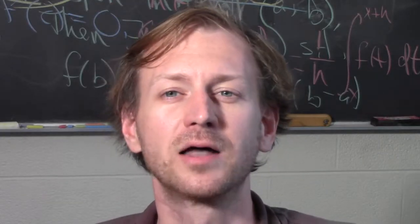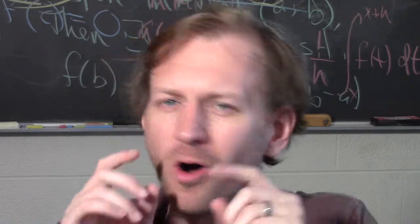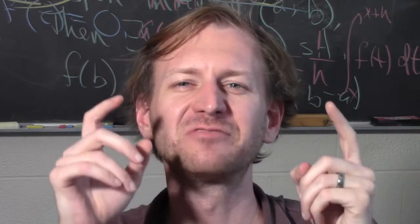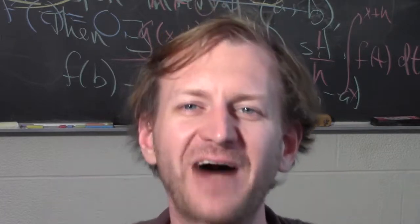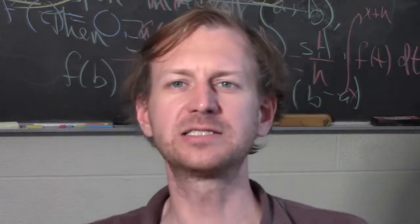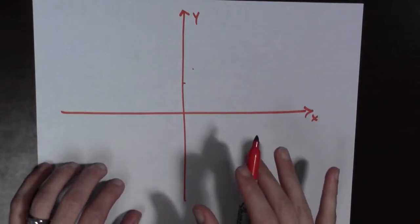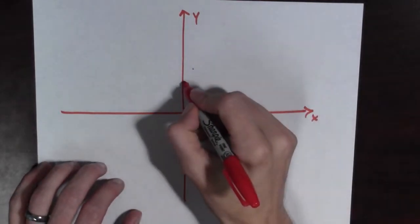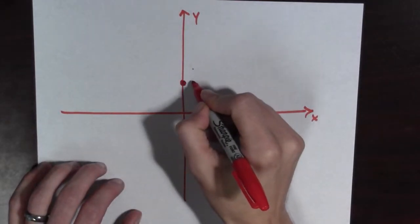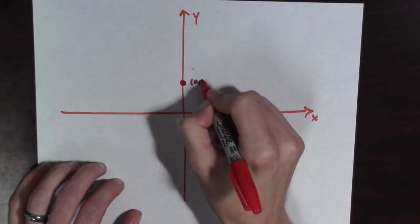Hello there. Now, suppose you have a function, and all you know about it is that f of 0 equals 5. What can you tell me about that function? It's hard to say much about this. All we really can do is plot the point 0, 5.